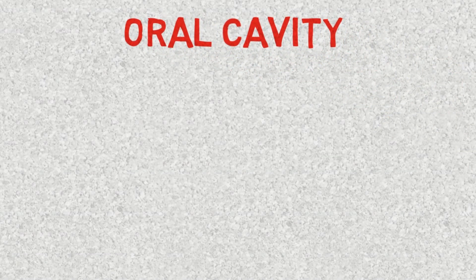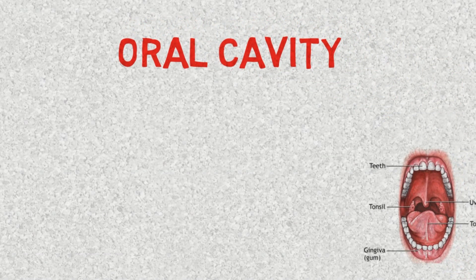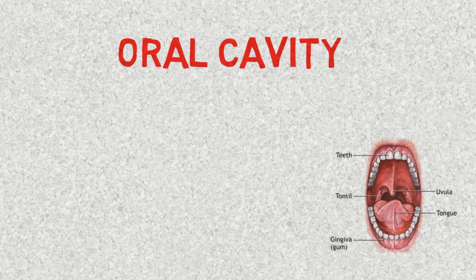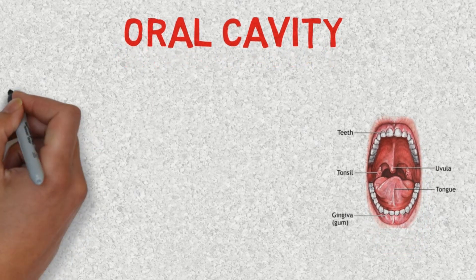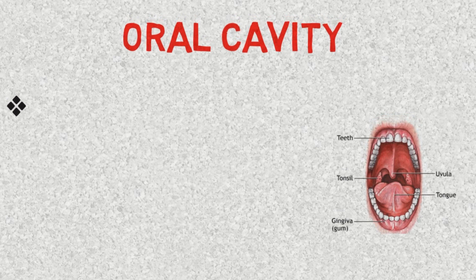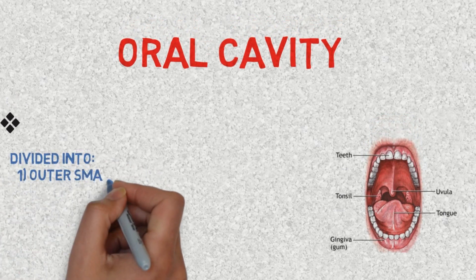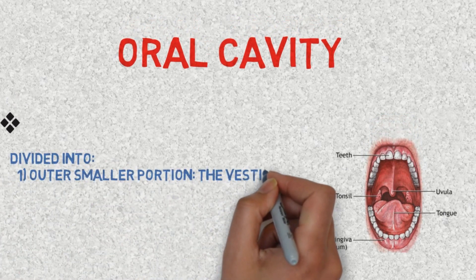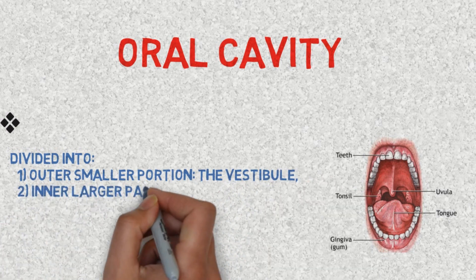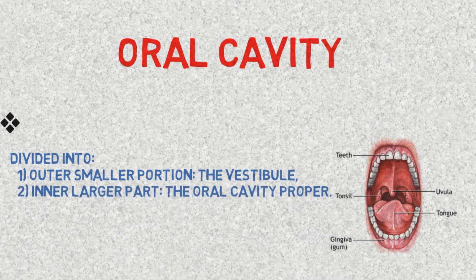The oral cavity is simply divided into two parts: the outer or smaller portion, and the inner or larger portion. The outer smaller portion is the vestibule, and the inner larger portion is also known as the oral cavity proper.